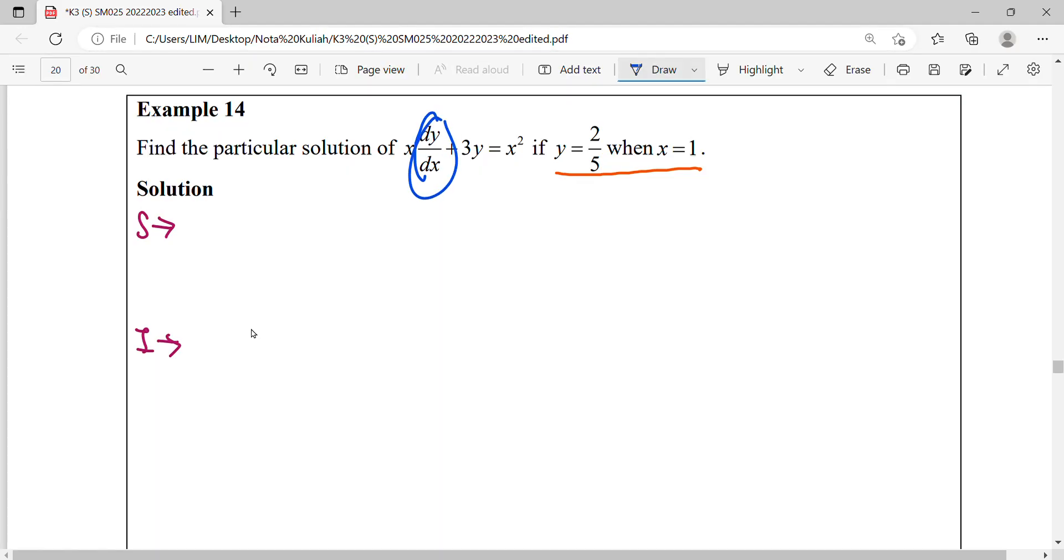This differential equation needs to be divided by x to get the coefficient of dy/dx as 1. When you divide by x, you cancel the x here. It will be dy/dx + 3/x·y equals x on the right-hand side. This is our standard form.